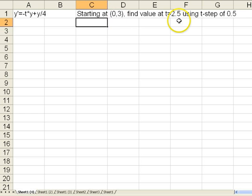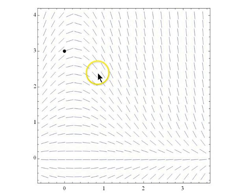We're trying to figure out an estimate for what the y value would be at t equal 2.5 and we'll be using t steps of 0.5. Now before we do any kind of calculations, we have to make sure we understand what we are doing. I will go back to a slope field and try to explain that to you. Here we have a slope field generated from Mathematica of y prime equals negative ty plus y over 4.